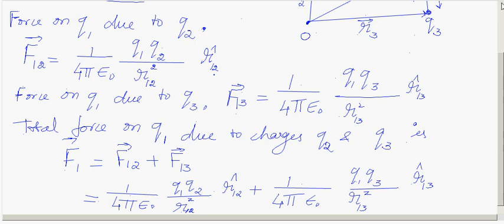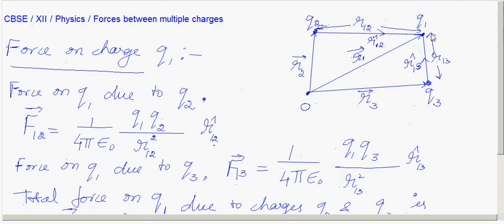Now let us show how these forces are added. By Coulomb's law the force acts along the line joining the two charges. Since Q1 and Q2 are like charges they repel each other, so F12 acts away from Q2. Similarly F13 acts along the line joining Q1 and Q3.